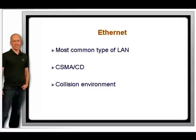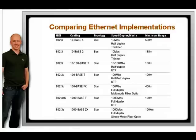Any Ethernet segment that uses coaxial cable — 10Base2 or 10Base5 — or a hub with twisted pair cabling is a collision environment. Collisions clog up a network because they prevent data from being sent. The more hosts sharing a wire and the more data they have to send, the worse it gets. A group of devices affected by one another's collisions is called a collision domain. As networks grew, it became necessary to break up collision domains so that there are fewer collisions in each one. Devices called bridges and switches did this.